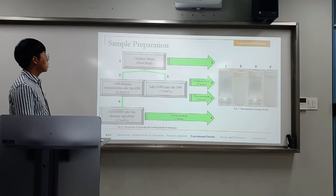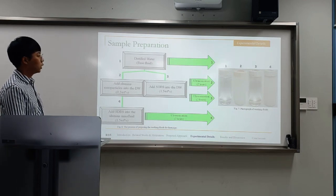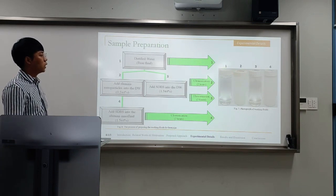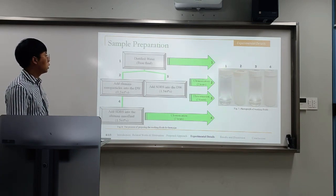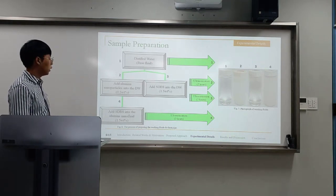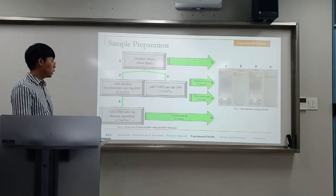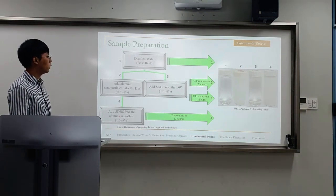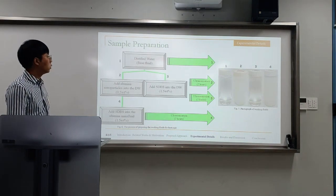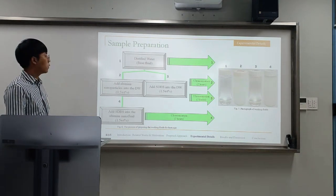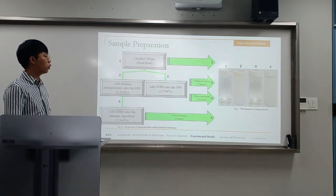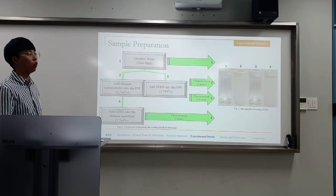The process of preparing the nanofluid includes four fluid types: distilled water, alumina nanofluid, alumina nanofluid with SDDS, and distilled water with SDDS. All samples, except for distilled water, were ultrasonicated for 2 hours to disperse well.